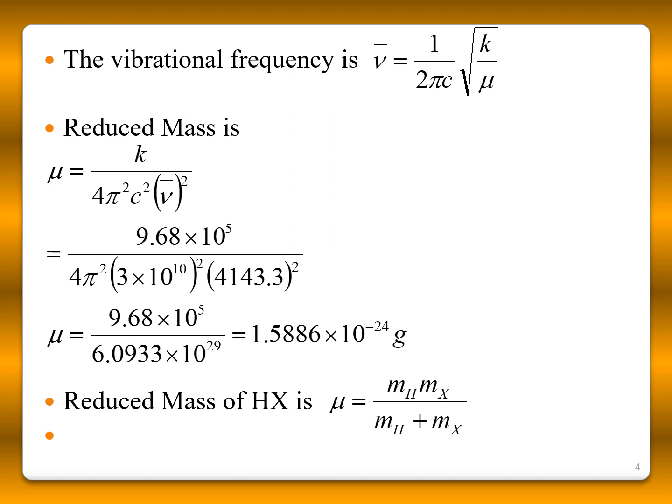You know, for the diatomic molecule, the reduced mass formula is the mass of one atom, it is here H, and mass of X divided by mass of H plus mass of X.